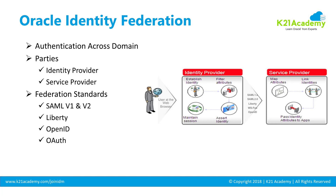Authentication across two different companies, enterprises, or domains is called Identity Federation. In Identity Federation there are always two parties: the identity provider and the service provider. Before Federation or cross-domain single sign-on can happen between these two parties, they must trust each other, and that is what you configure when you set up Federation.